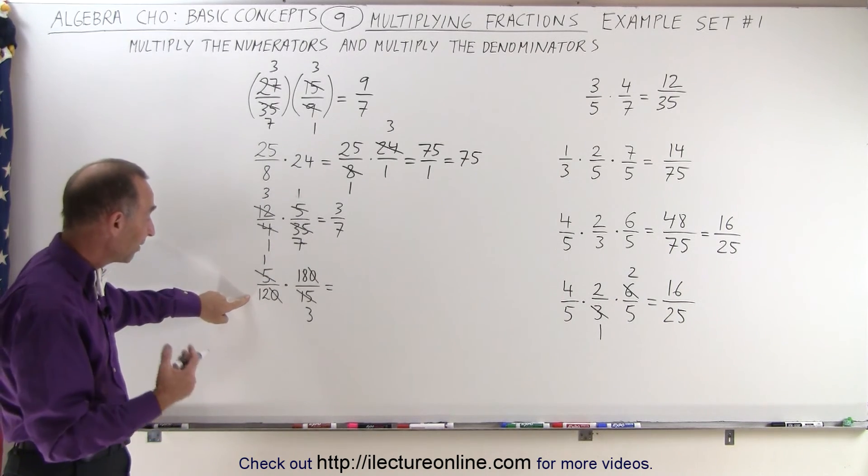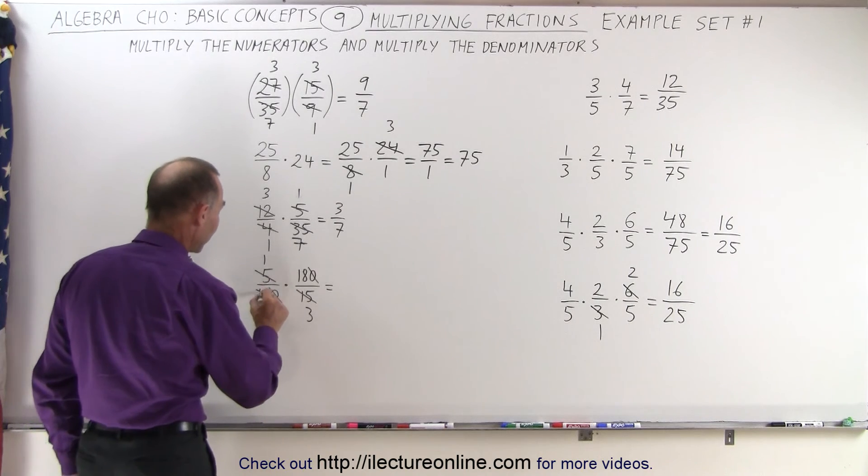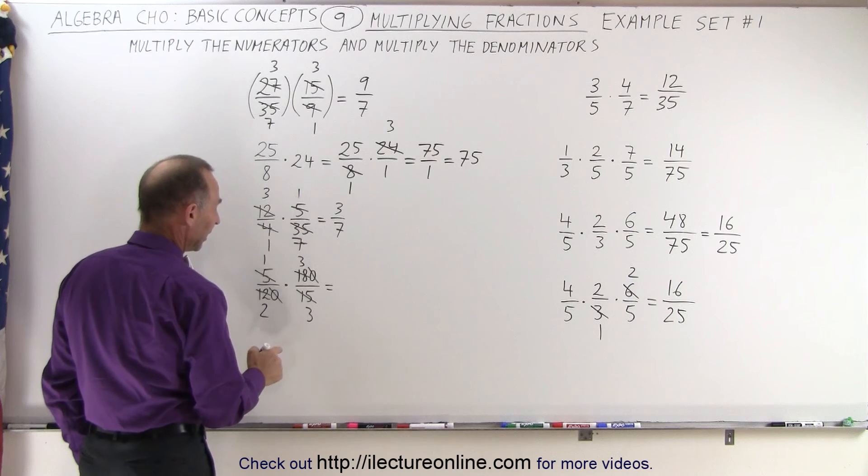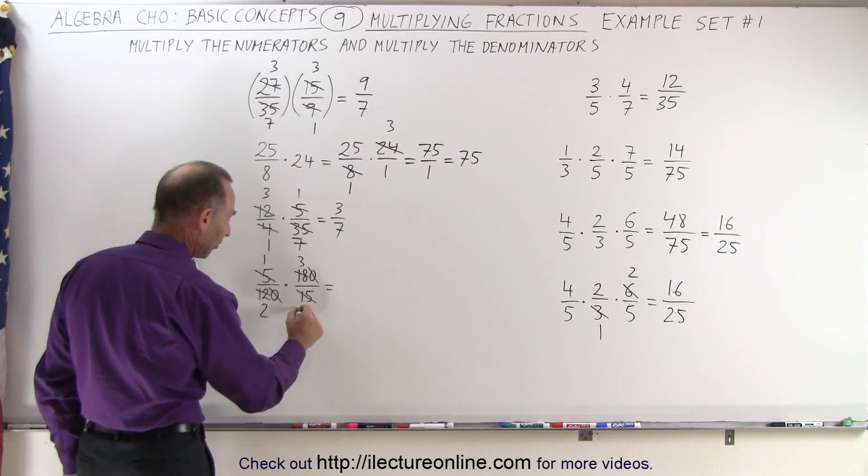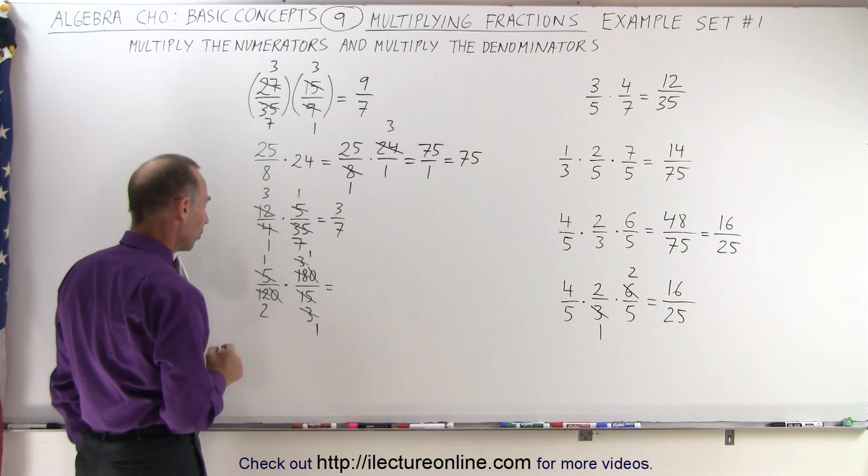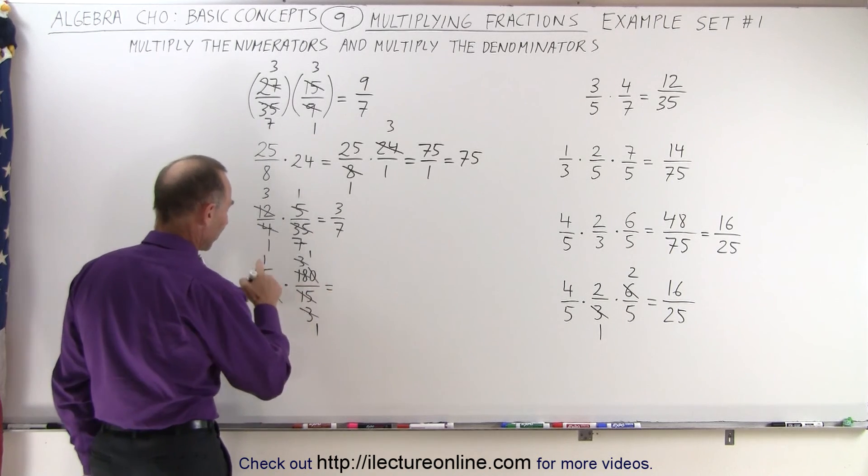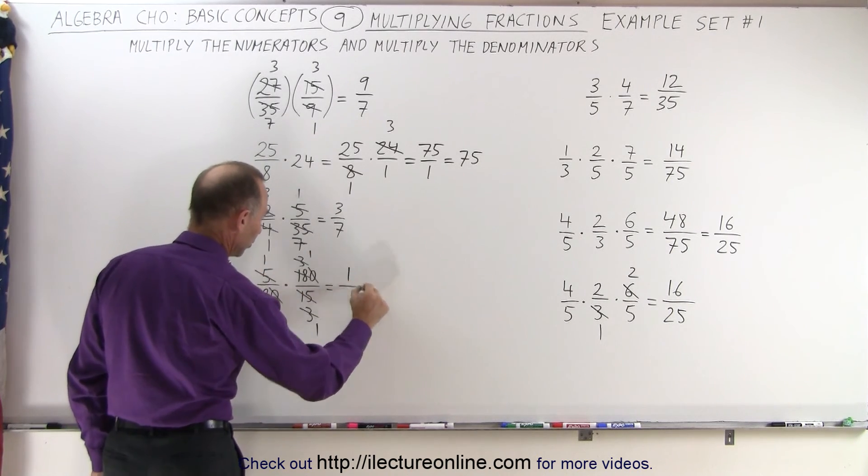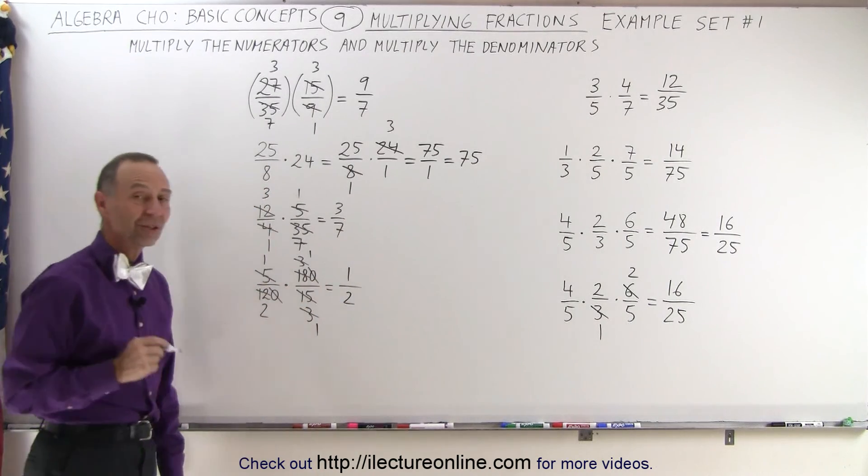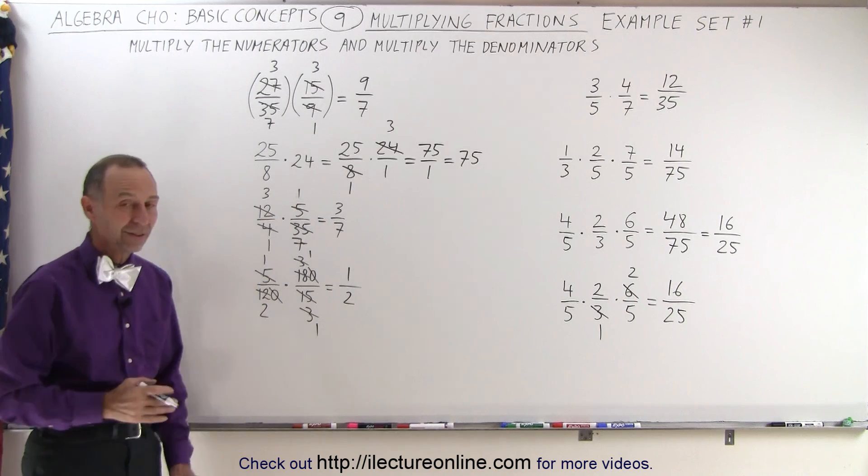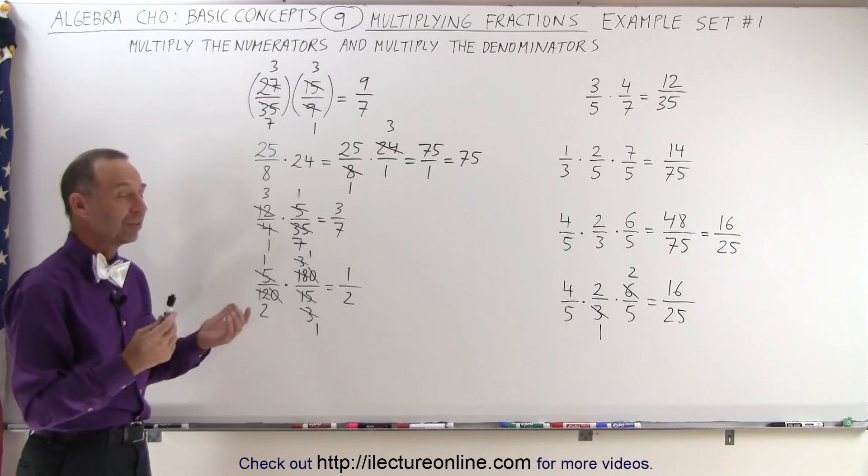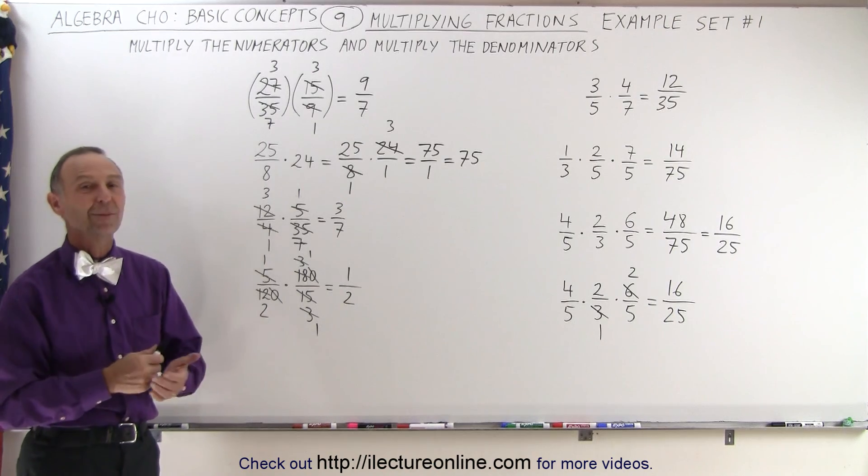We can see they're both divisible by 6. So 12 divided by 6 is 2, and 18 divided by 6 equals 3. Then we have a 3 and a 3 here. So this 3 and this 3 can be divided by 3, which becomes 1 and 1. Now our fraction becomes 1 times 1 which is 1 in the numerator, and 2 times 1 which is 2 in the denominator. See how much easier it is to multiply them out. Simplify first before you multiply them if you can. That makes the job a lot easier. And that's how it's done.